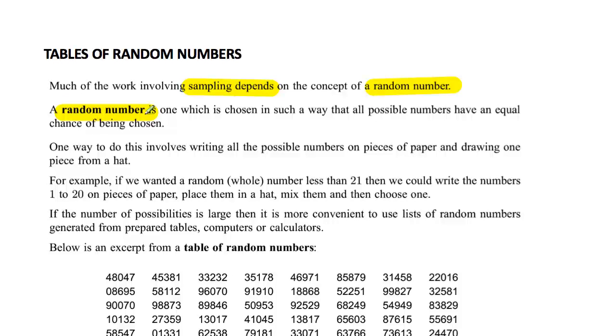A random number is simply a number that is chosen in such a way that any number could have an equal chance of being chosen. So you're picking a number that comes up equally possible with any other number that you could choose from.